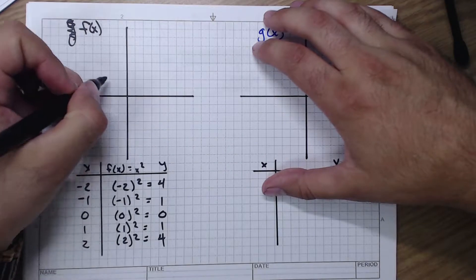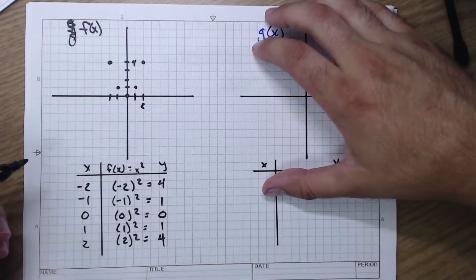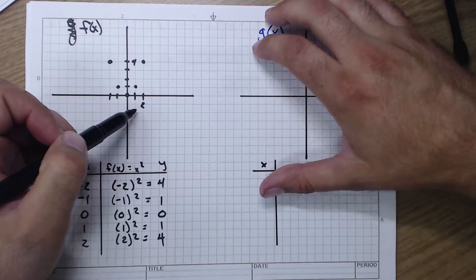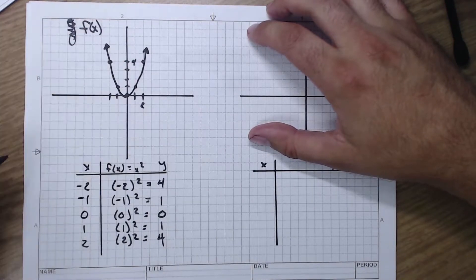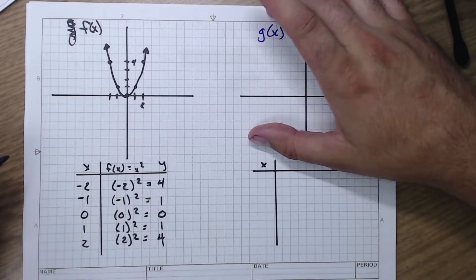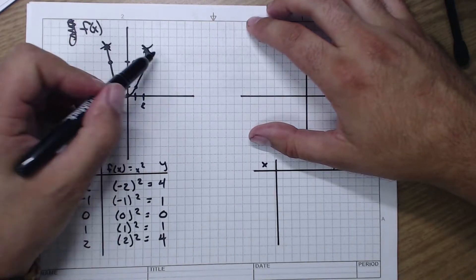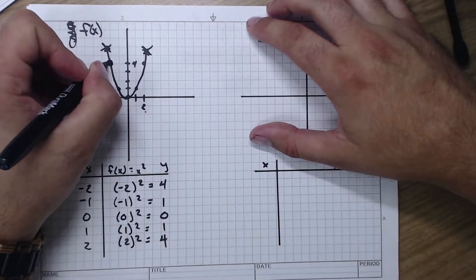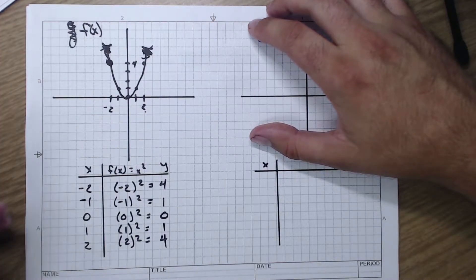Now we graph it. So this is my x, this is my y. So I have the coordinate point, negative two, four, negative one, one, zero, zero, one, one, two, four. Graphing all of those. Make sure you give me some numbers on your y-axis and your x-axis. That way I know what scale you're using. Oh, I actually just did that a little bit wrong. We don't want to have arrows. We only care about negative two to two.